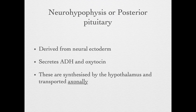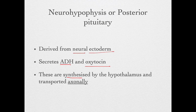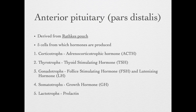The neurohypophysis or posterior pituitary is formed from neural ectoderm, the same tissue that forms the hypothalamus and the rest of the brain. The posterior pituitary secretes two hormones: ADH and oxytocin. These are only secreted by the posterior pituitary but are actually synthesized by the hypothalamus and transported axonally. The posterior pituitary stores these hormones and releases them into the bloodstream as required.